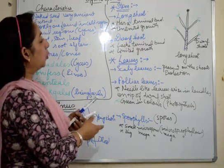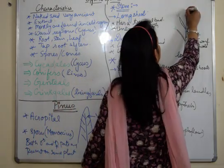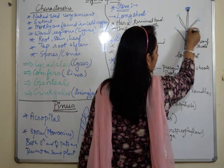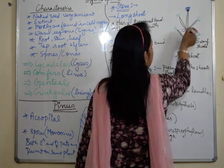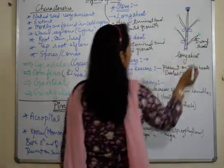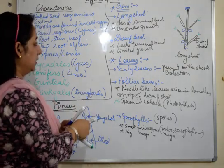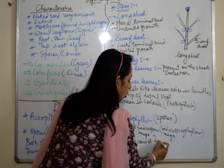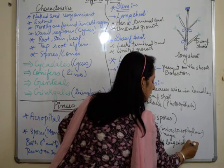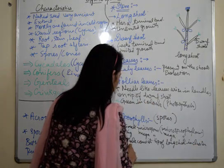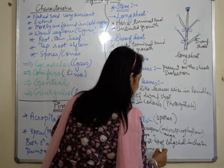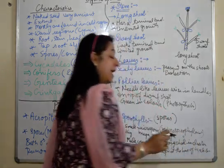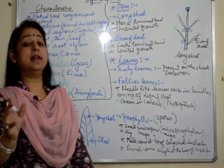The male cones are present in a cluster at the terminal shoot, whereas the female cones are present at the axil of the scaly leaves and are larger in size. Sporophylls form the male cones at the tip of the long shoot in clusters, and female cones are single at the base of scale leaves. Male cones are smaller in size whereas female cones are larger in size.